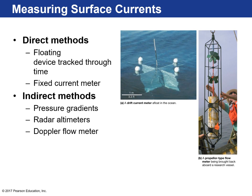So how do we know this? Scientists have been measuring ocean surface currents for a long time. There are direct and indirect methods. Direct methods include putting devices out in the water — floating devices and tracking that information through time. Sometimes they float with the current and then transmit that information to computers.